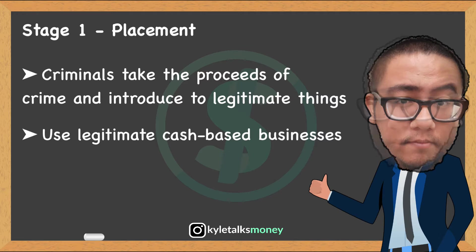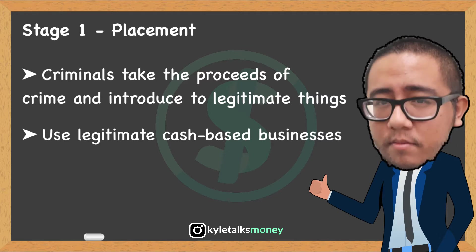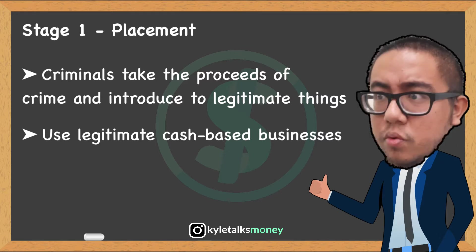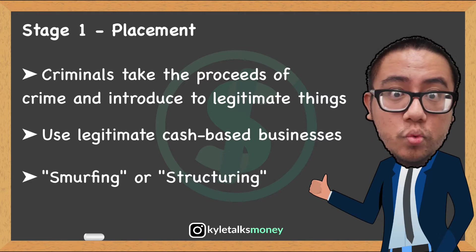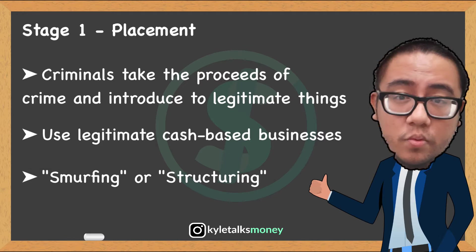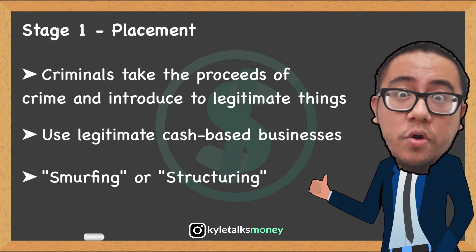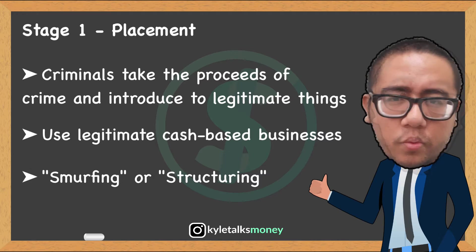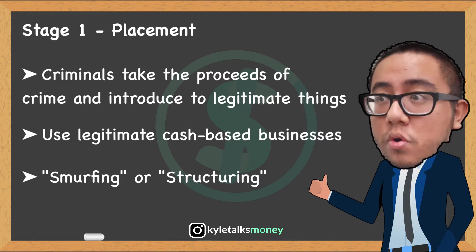Money launderers deposit all the funds together into the business's bank account. Smurfing or structuring is another placement method. U.S. banks are required to report any transactions over ten thousand dollars. With this method, the criminal hires smurfs to deposit small amounts of dirty money into different banks, keeping each deposit under the ten thousand dollar threshold.